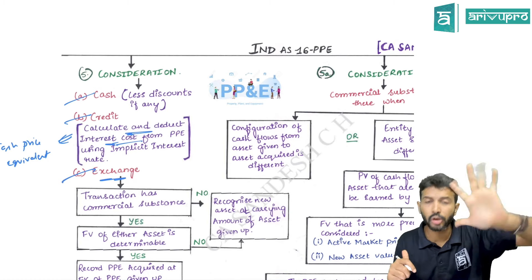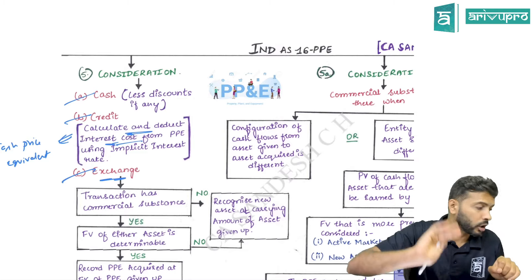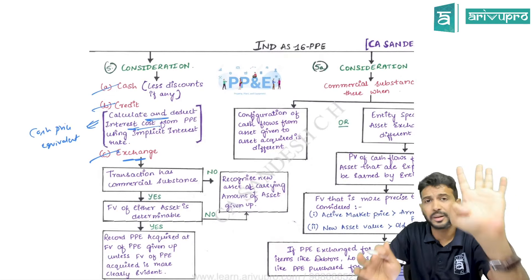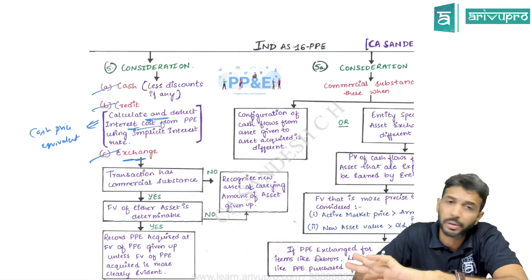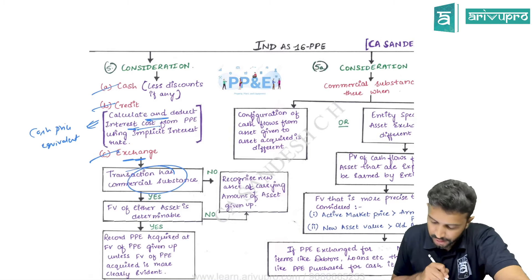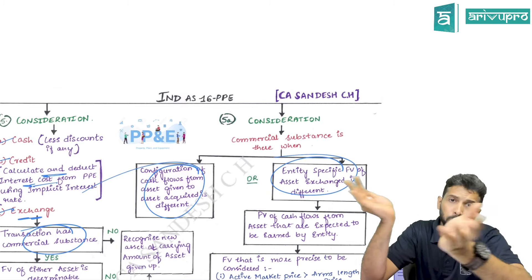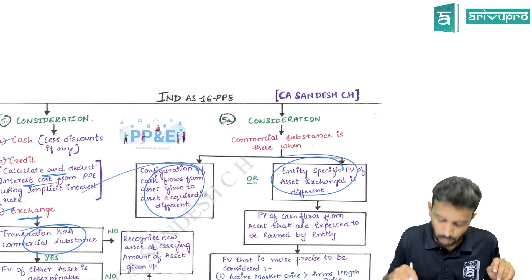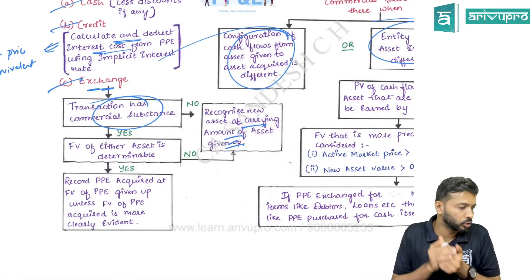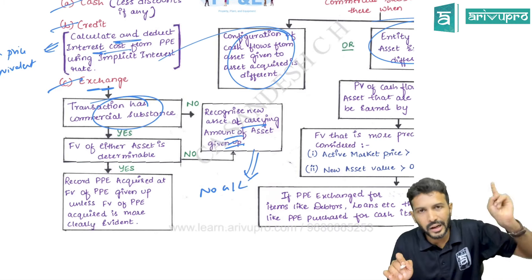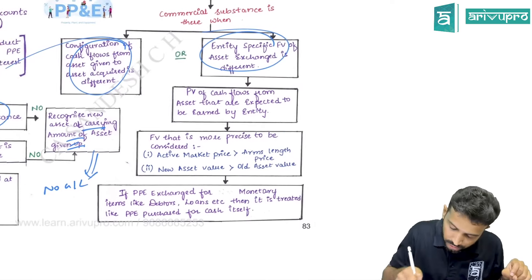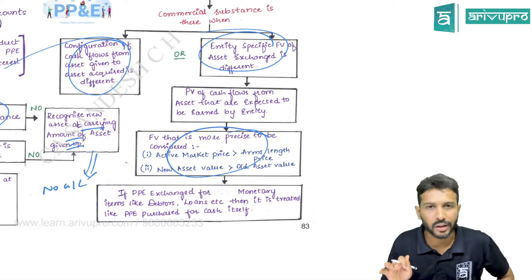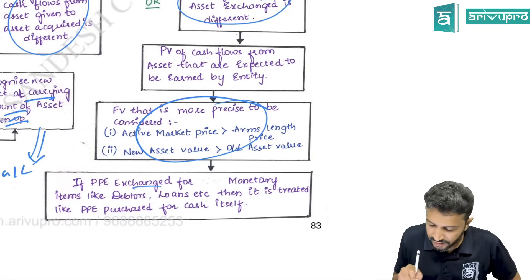If PPE is purchased on exchange terms, the thumb rule is to use fair value. Fair value need not be used under two circumstances: one, if the transaction lacks commercial substance, or two, if the fair value of both the asset acquired and given up is not determinable. A transaction lacks commercial substance when asset-wise cash flows and entity-wise cash flows are the same. If not using fair value, use the carrying amount of the asset given up — in which case no gain or loss is recognized.